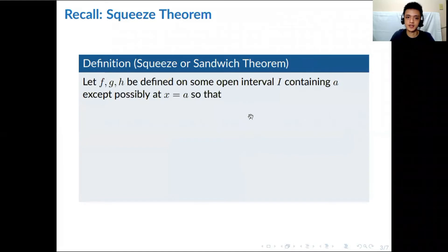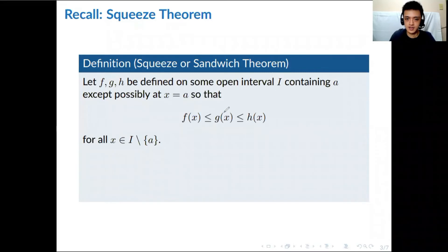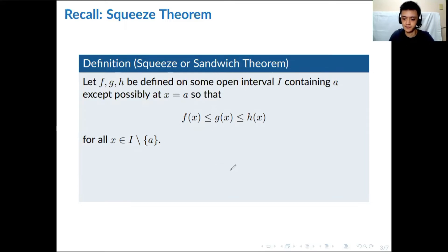Next is the Squeeze Theorem, also called the Sandwich Theorem — one of my favorites in MATH 21 because of how cool it works. Let f, g, and h be functions defined on some open interval I containing a, except possibly at x equals a. The crucial part: f(x), g(x), and h(x) can be arranged so that one of them is sandwiched between the other two — satisfying the inequality for all x in some interval except possibly at a.